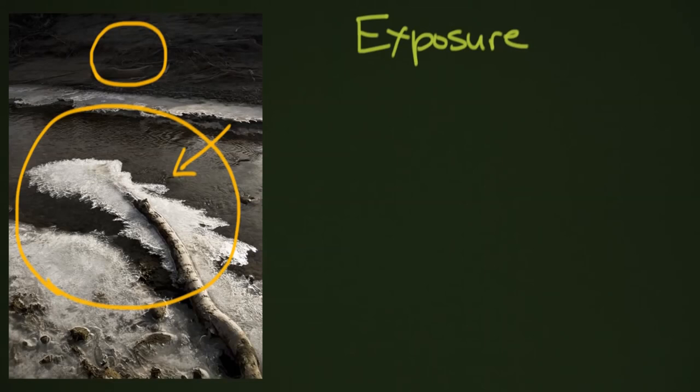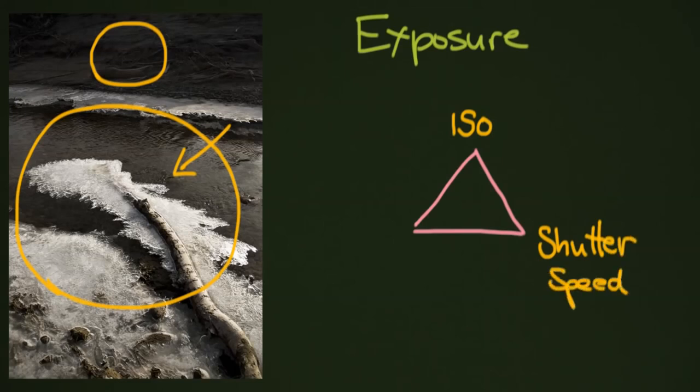So first of all, exposure is often said to be in a triangle. We're going to make ourselves a little pink triangle here. And on the top, we're going to have ISO. To the right, we're going to have your shutter speed. And to the left, we're going to have your aperture.